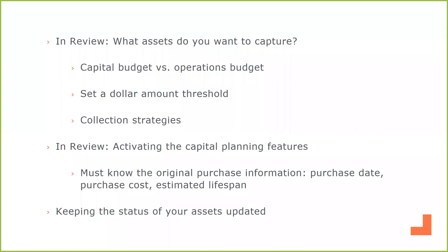Different collection strategies — with a main focus on an FCA, that can be very valuable, not only with the information it provides, but it's also going to be an accurate and fast way to expedite that collection process. Some of the things we'll also look at in the system is how you can add assets yourself and what types of information you'll need. In order to activate the capital planning features, there are three main pieces of information to focus on: knowing your original purchase date, purchase cost, and estimated lifespan.